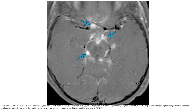This is a T1C+ fat-saturated MRI in a six-year-old who presented six years earlier with hydrocephalus of unknown etiology, with a diagnosis of diffuse leptomeningeal glioneuronal tumor. There is extensive leptomeningeal enhancement and nodularity in the basal cisterns, which is the most common area of intracranial involvement in diffuse leptomeningeal glioneuronal tumor.